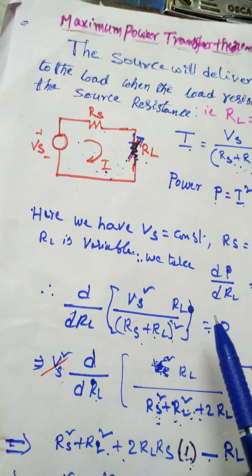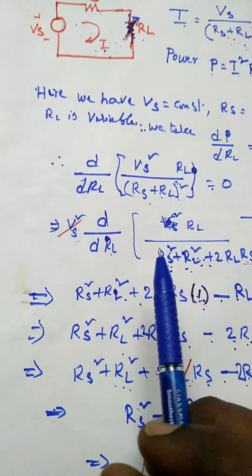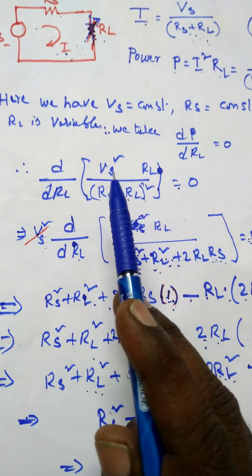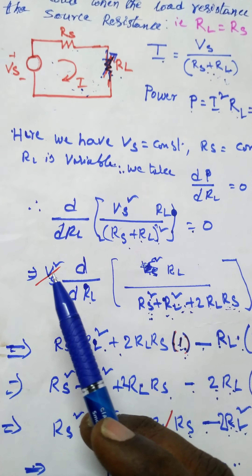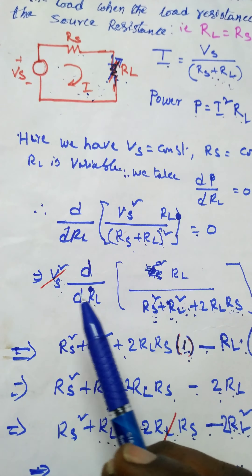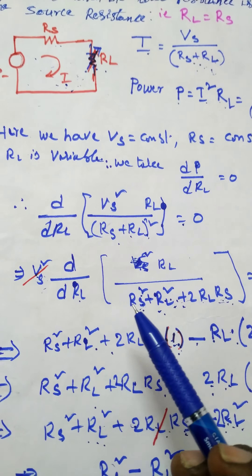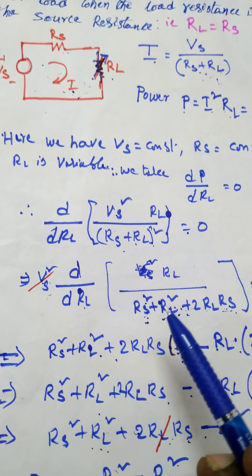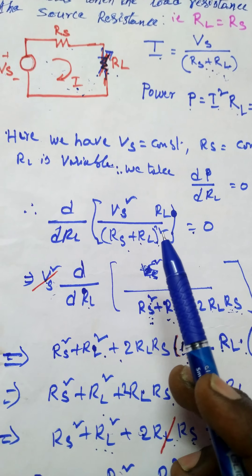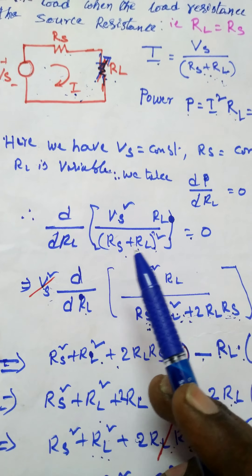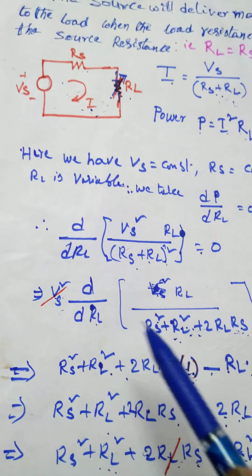Since VS is constant, pull it out. We get VS squared times d/dRL of [RL divided by (RS plus RL) squared] equals zero. Note that (RS plus RL) squared is just like your (a plus b) whole square expansion.